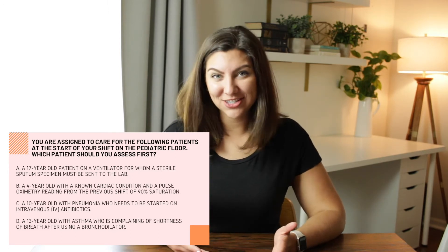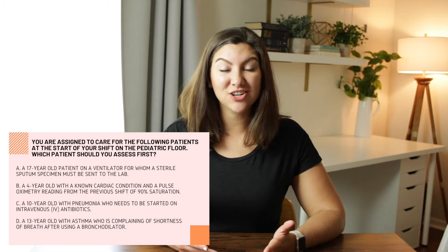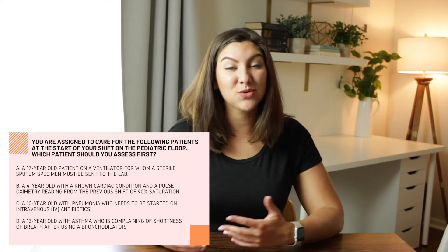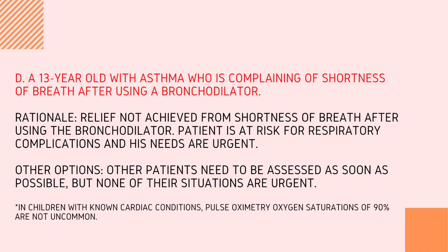If we look at answer D and we ask ourselves again: is this patient experiencing what I would expect them to based on their disease or condition? The answer is clearly no. Because of this unexpected finding, we know that this patient has the most urgent need and we will need to assess him first. I like this question because it is a classic NCLEX scenario where all of the answers could seem correct, and it's hard to apply tools like the ABCs and Maslow's hierarchy of needs because those tools don't narrow down your answer selection enough. This is a great example of how the stability framework can get you to the right answer.